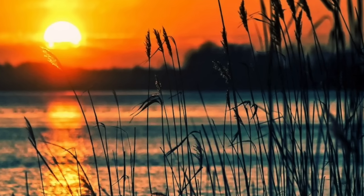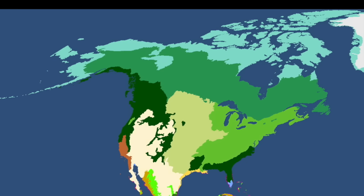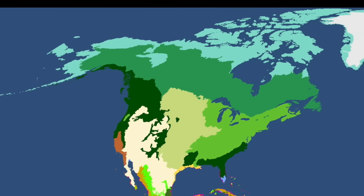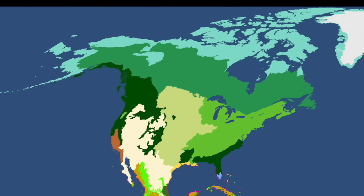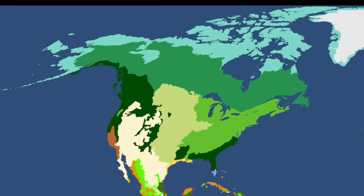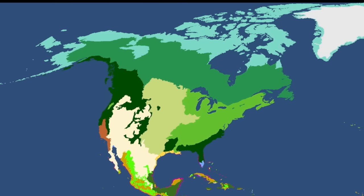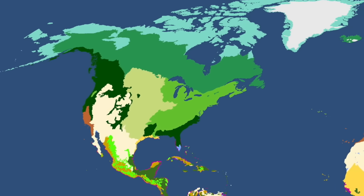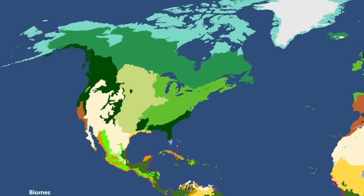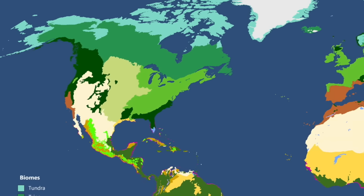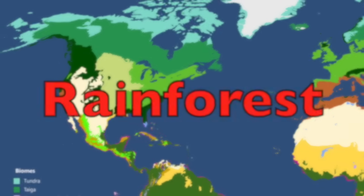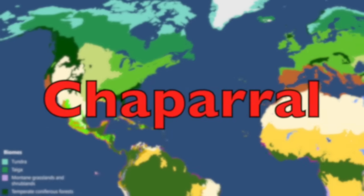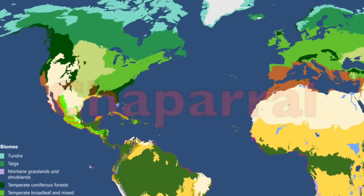Some ecologists believe those transition zones are also separate biomes. For example, some people say there are only five major types of biomes: aquatic, desert, forest, grassland, and tundra. But there are others that split biomes even further. Forests can be separated into categories like rainforest, temperate forest, chaparral, and taiga.